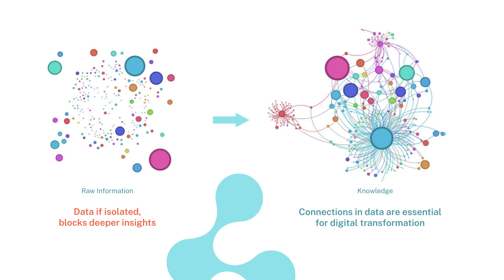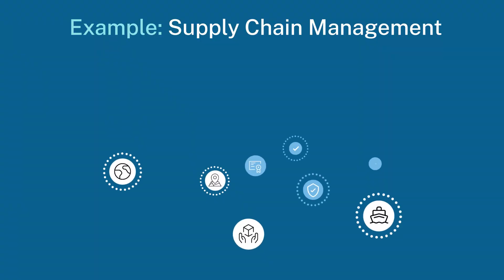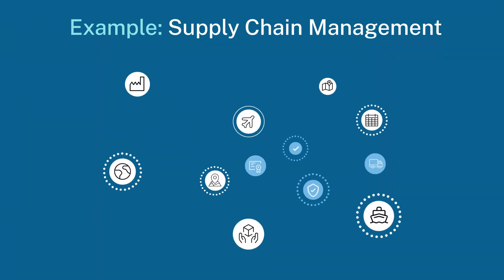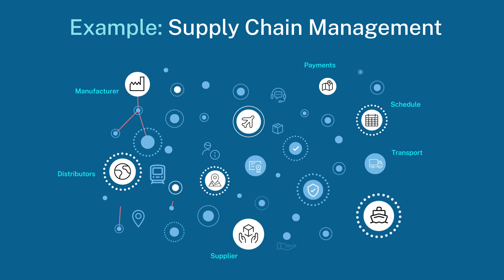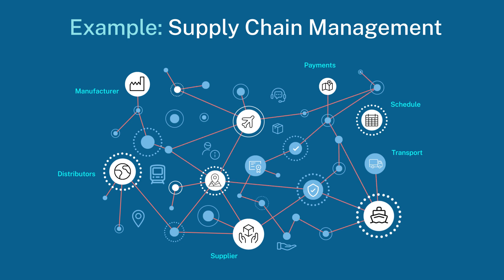For example, relationships within supply chain networks are complex. Supply chains involve manufacturers, suppliers, distributors, and retailers, each with its own processes and data systems. Managing these relationships effectively requires a deeper understanding of the flow of goods, inventory levels, logistics, and even potential bottlenecks.